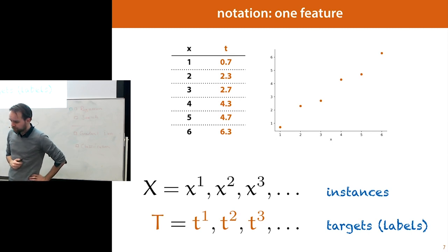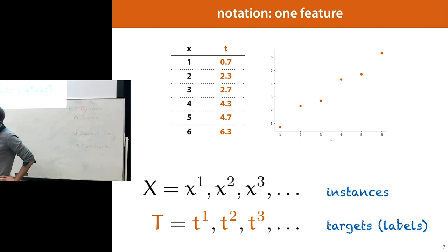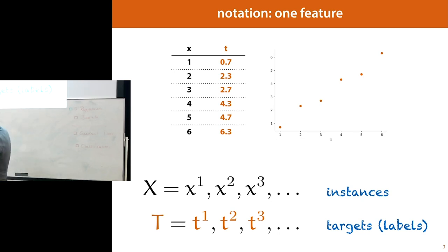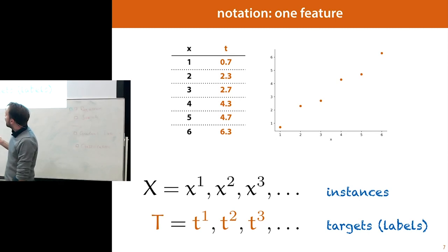For this lecture we'll use this notation. Capital X is our whole dataset, our whole set of features. Capital T is our whole set of labels. We'll use superscripts to iterate over the instances — that's just for this lecture; in future lectures I might switch to subscripts. In this lecture, it's good to keep separate the index over the instances and the index over the features. For each instance, there is one corresponding label.